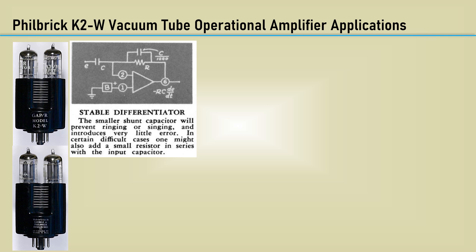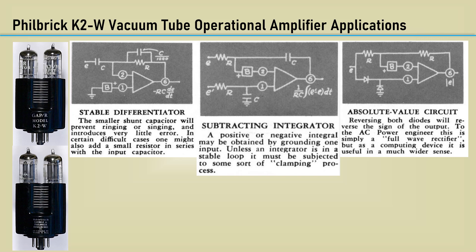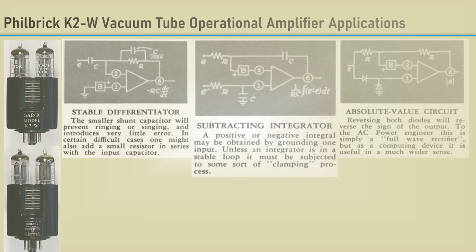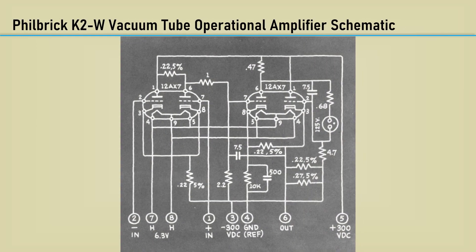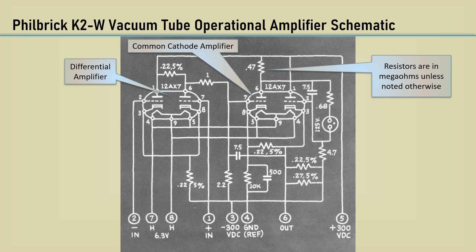It was also an objective as an analog computer to simulate dynamical systems — such as a differentiator function and an integrator function, in this case a subtracting integrator. The absolute value circuit was also introduced, producing the basic function of a full wave rectifier. Here is the schematic diagram of the Philbrick K2W. Note the resistor values are in megaohms unless otherwise noted — that was common in those days since most tube amp resistors were high resistance. Here is the differential amplifier section, like the modern day transistor equivalent. The output is a cathode follower, which provides low output impedance.